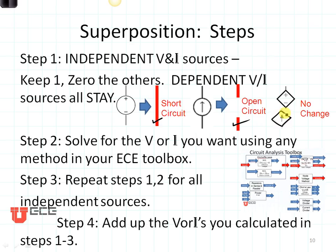In step two, solve for any voltage or current that you want using any of the methods in our ECE toolbox. Then repeat these steps for each of the independent sources separately. Add up the voltages and currents that you calculated from each of those steps to find the total voltage or current in your system.